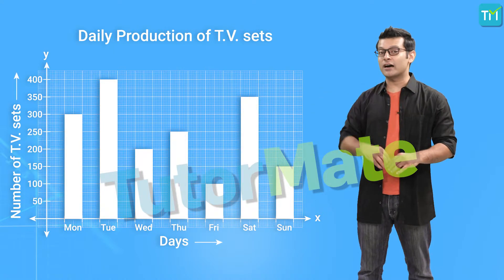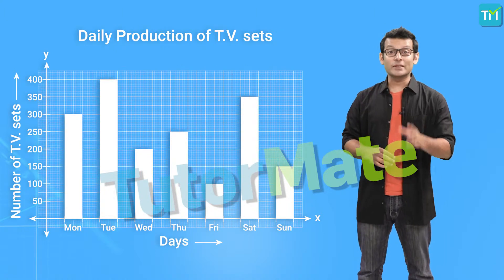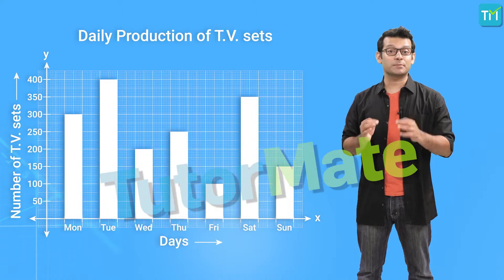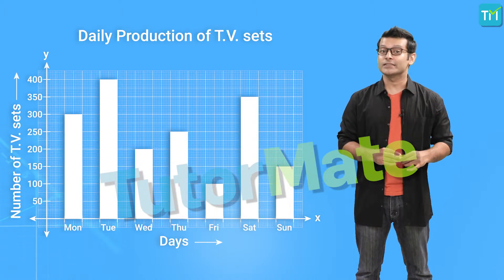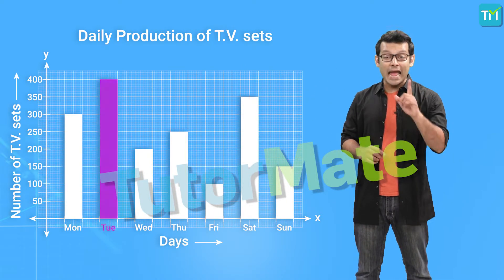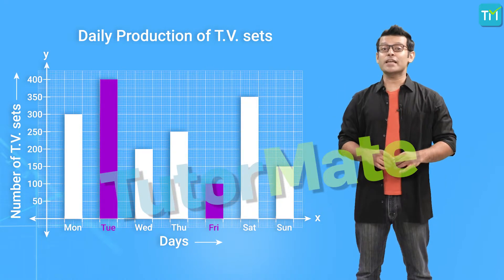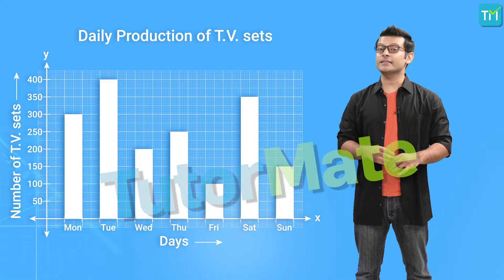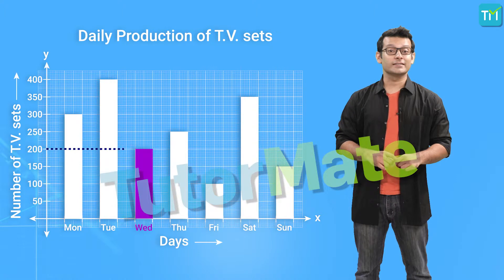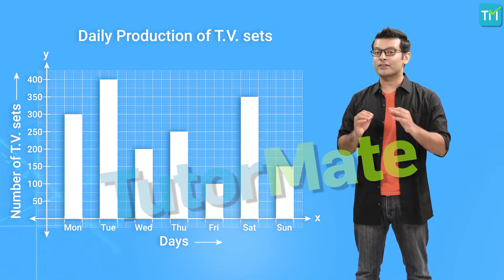Just by using this graph one can answer various questions pertaining to TV production. We can easily find on what day maximum production takes place and what day it is the least. The production was highest on Tuesday and lowest on Friday. How many TV sets were produced on Wednesday? It is indeed 200. In this way a variety of data can be represented on a bar graph.